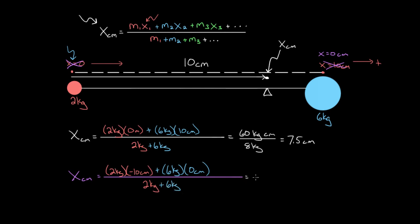We're gonna get two times negative 10, plus six times zero, well, that's just zero. So this is gonna be negative 20 kilogram centimeters, divided by eight kilograms, gives us negative 2.5 centimeters.